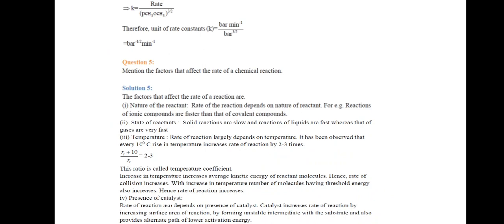Next question: Mention the factors that affect the rate of a chemical reaction. First, the nature of the reactant — the rate depends upon the nature of the reactant; for example, reactions of ionic compounds are faster than those of covalent compounds. Second, state of reactants — solid reactions are slow, liquid are fast, and gases are very fast.